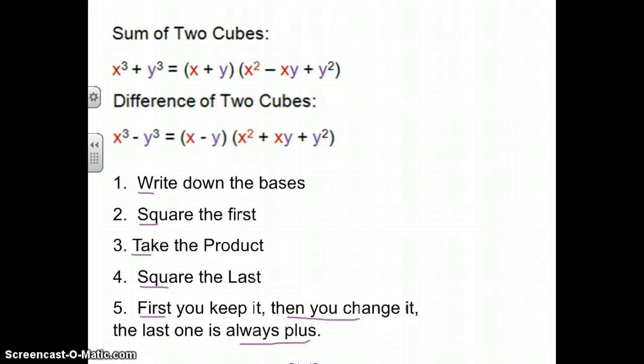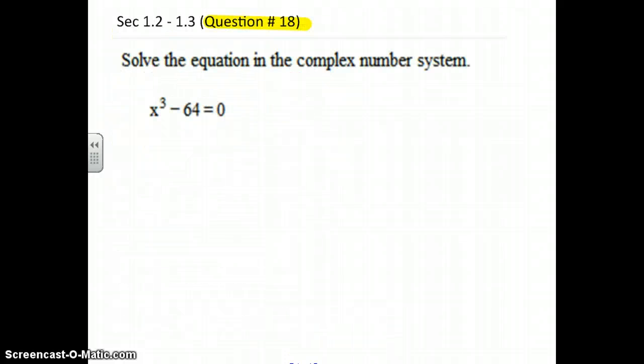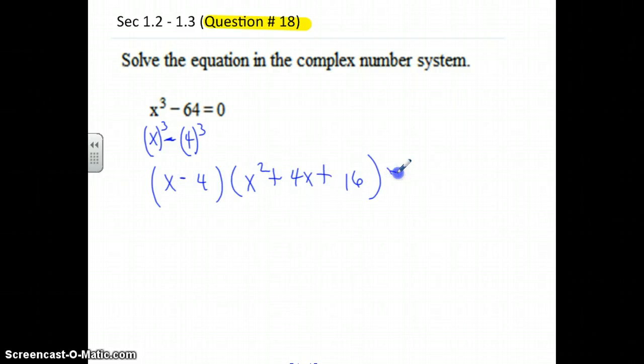So going back to the original problem and let's apply this rule. The base here is x, the base here is 4, and so I'll apply the rule. Write down the bases, let's square the first, take the product of the bases, square the last. First you keep the sign which is a minus, then you change it, and the last one's always plus. So we set each of these factors equal to zero and we get the same answer that we did before. We already knew that x equals 4, that's one of our solutions, but we're left with something interesting over here. Now we're left with two solutions, and since I can't find factors of 16 that add up to 4, I'm going to use the quadratic formula.